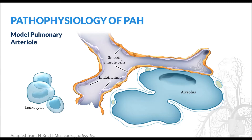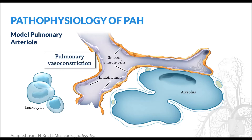Several processes are implicated in the pathophysiology of PAH, as illustrated in this example pulmonary arteriole. An imbalance of physiologic vasoconstrictors and vasodilators leads to net vasoconstriction of the pulmonary smooth muscle. Inflammatory mediators, such as leukocytes, are also often involved.